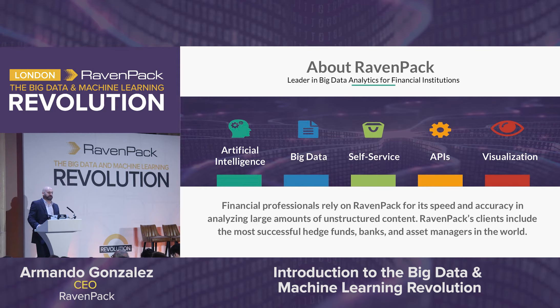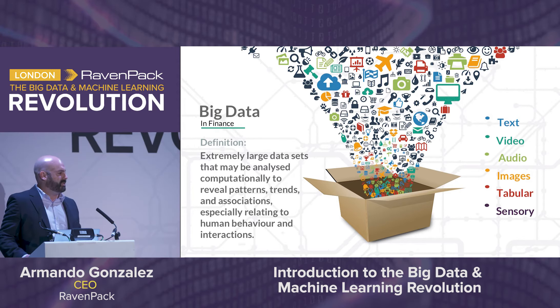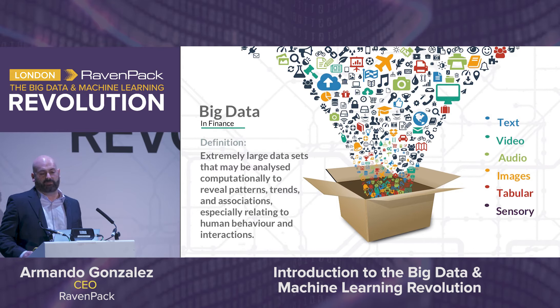For those that don't know RavenPack, we are a company that specializes in analyzing unstructured content. We're better known for doing sentiment analysis on news and social media, but we've built quite a stack of technology that helps us not only analyze news, but we can analyze anything that is text. We specialize in the natural language processing side of artificial intelligence, but we've also become a big data technology company, leveraging cloud computing and other technologies to make data more accessible and easily available for analysis.